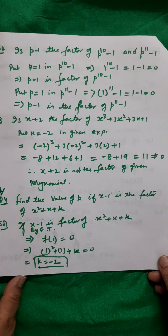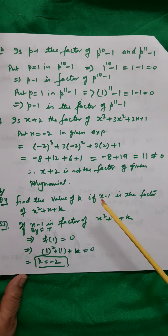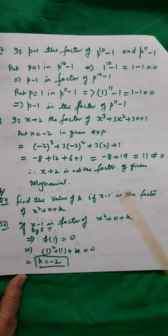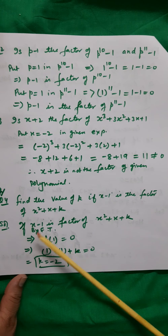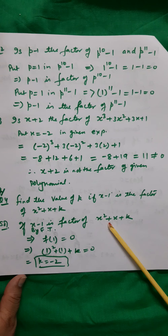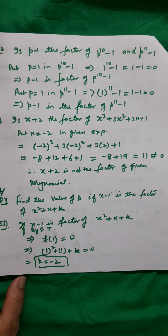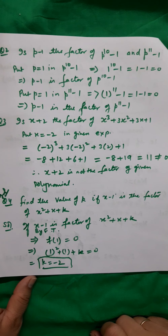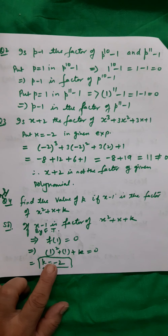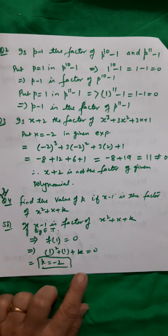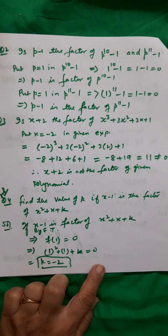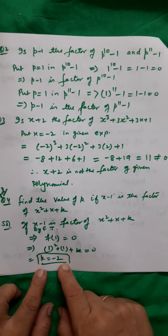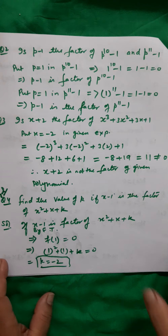Question 4: Find the value of k if (x − 1) is a factor of x² + x + k. By the factor theorem, if (x − 1) is a factor, then f(1) = 0. So 1² + 1 + k = 0, which gives 2 + k = 0, therefore k = −2. This is an application of the factor theorem.